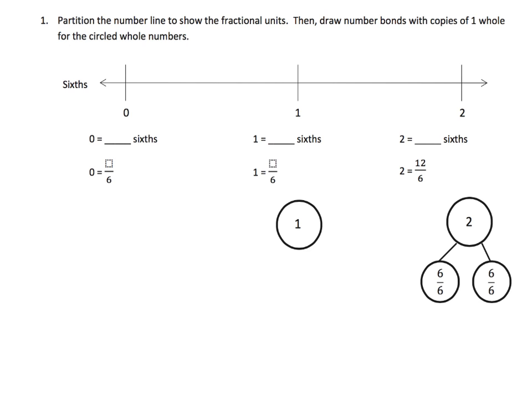So in this here, the directions say partition the number line to show the fractional units, then draw number bonds with copies of 1 whole for the circled whole numbers. So what does that mean? Basically, it means let's start off with partition the number line to show the fractional units. So it tells us right here that we're supposed to be doing everything in sixths. So that means the distance from 0 to 1 has to be cut into six equal pieces, and then the distance from 1 to 2 has to be cut into six equal pieces.